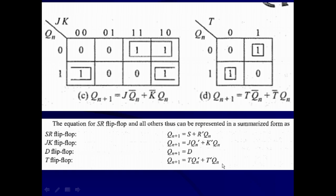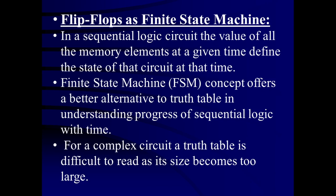These are the characteristic equations: for SR flip-flop, Qn+1 = S + R̄Qn; for JK flip-flop, Qn+1 = JQ̄n + K̄Qn; for D flip-flop, Qn+1 = D; and for T flip-flop, Qn+1 = TQ̄n + T̄Qn.